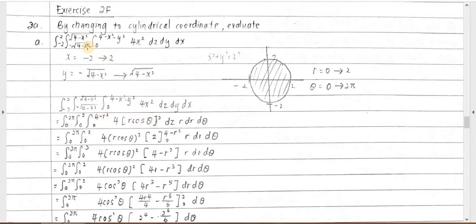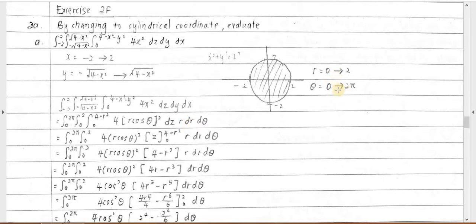When you replace all the parameters with cylindrical coordinate parameters, note that x squared plus y squared is replaced by r squared. For dz, you already have the interval defined. For dr, the interval is 0 to 2, and for dθ, the interval is 0 to 2π. These three — dz, r dr, dθ — are a package.